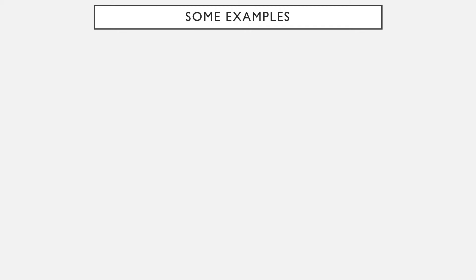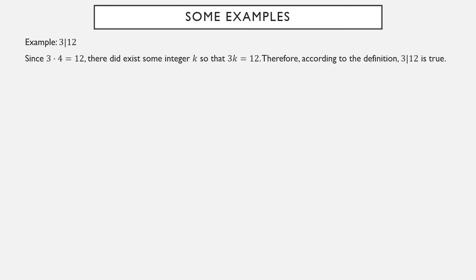Let's look at a few examples of factoring. Here's a statement: 3 is a factor of 12. Why is this true? Because there is an integer k — specifically 4 — so that 3 times k is equal to 12. 3 times 4 is equal to 12. So according to the definition, it is true that 3 is a factor of 12.